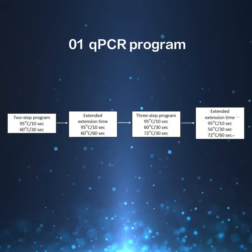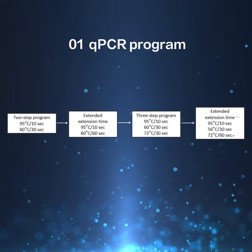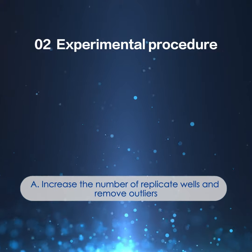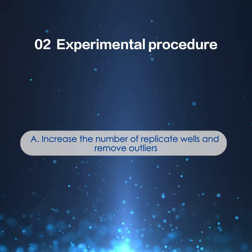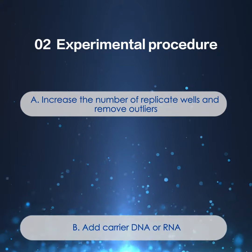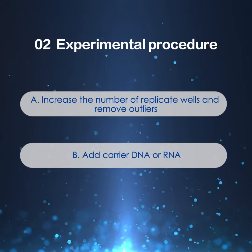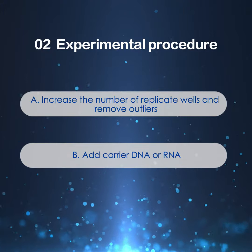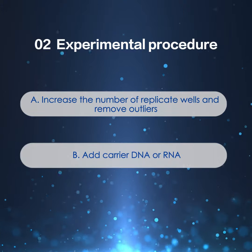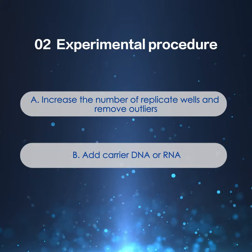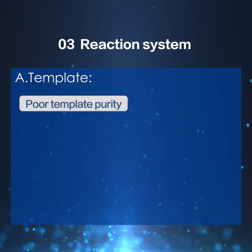To optimize qPCR assays for better detection of low expression genes: use a three-step instead of two-step program, or increase extension time to improve amplification efficiency. Increase the number of replicate wells and remove outliers. Or add carrier DNA or RNA that neither reacts with the target gene nor interferes with the assay, to minimize loss of target genes.